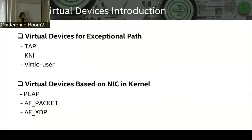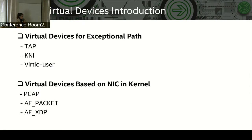There are more than 10 types of virtual device in DPDK. Today we will focus on two categories which have potential usage in OVS DPDK. The first category includes KNA and virtual user, which can be used as exceptional paths by redirecting user space packets to kernel interface. The other category includes PCAP, FPacket, and FSDP. These three virtual devices provide a solution to receive packets from kernel NIC to user space without poll-mode driver.